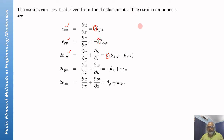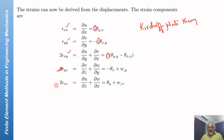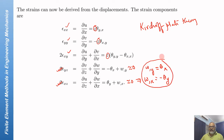In Kirchhoff plate theory, similar to Euler-Bernoulli beam theory, the strains epsilon YZ and epsilon XZ are taken to be approximately zero. This implies that W,X equals minus theta Y and W,Y equals theta X. These are the outcomes of the Kirchhoff plate theory assumptions that express the rotation about the X axis and the rotation about the Y axis in terms of del W del Y and del W del X.